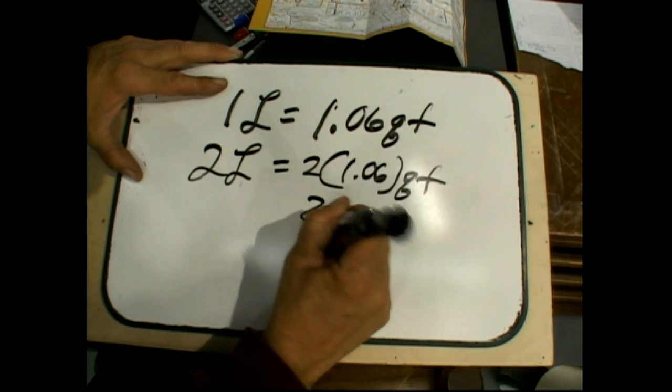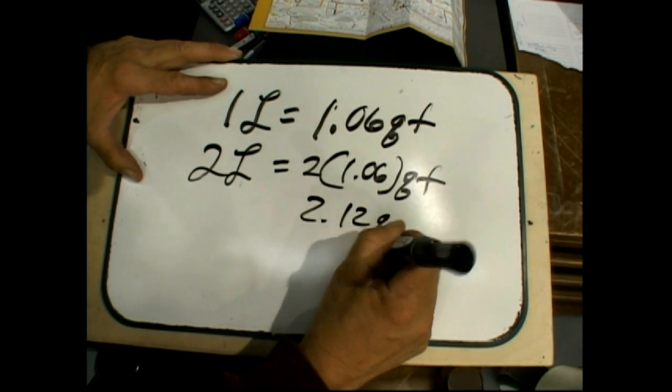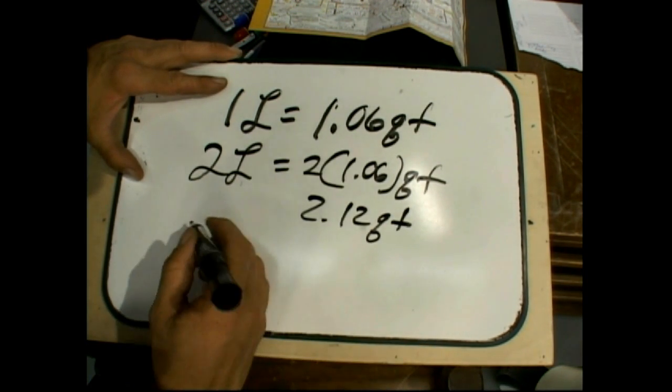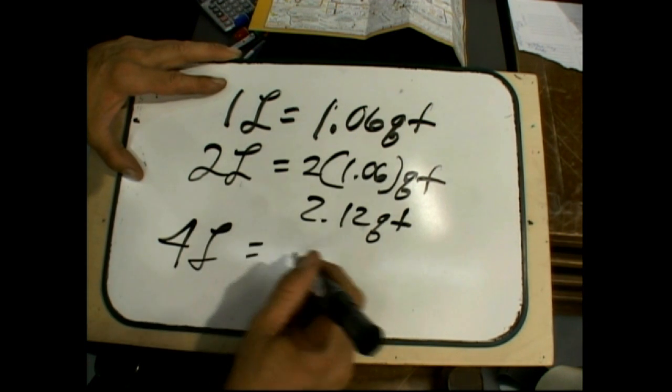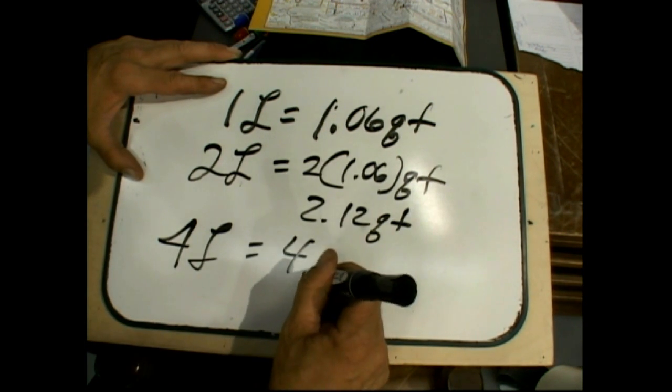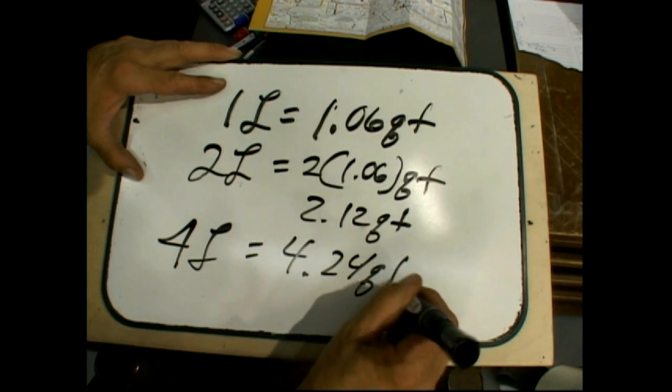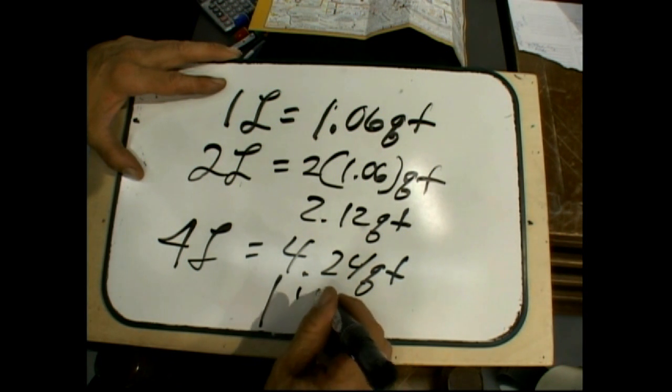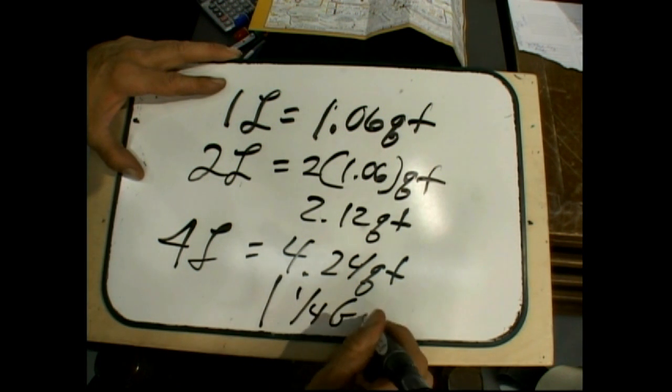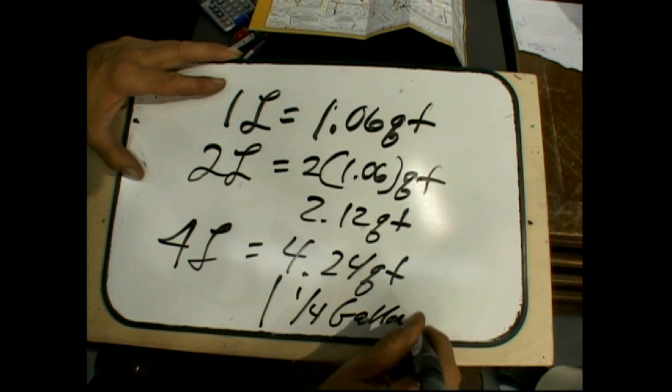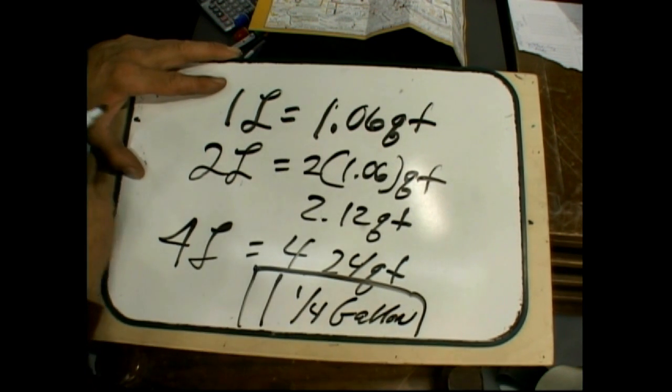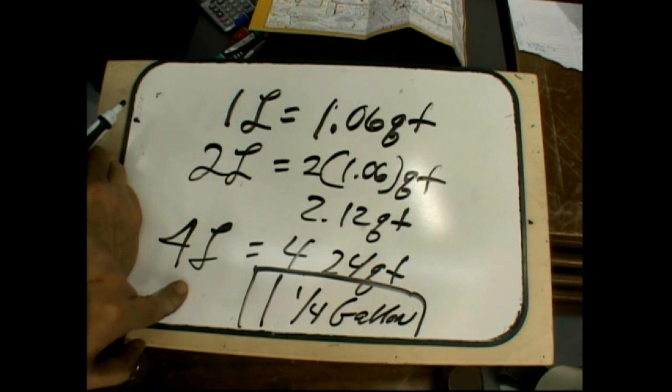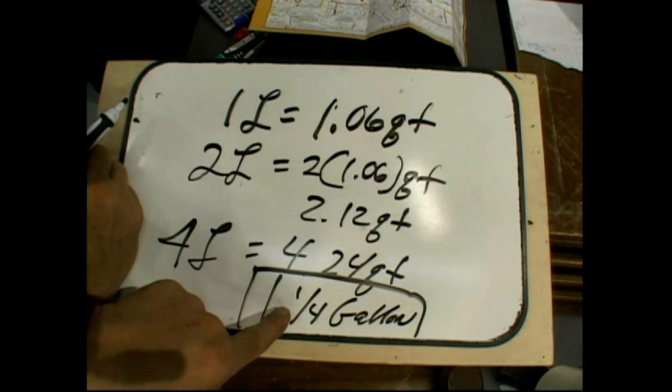It's going to be 2.12 quarts is what your two-liter soda is. So four liters of soda would equal 4.24 quarts, which is one and almost a quarter of a gallon. So the question would be, what's bigger? A gallon or four liters?